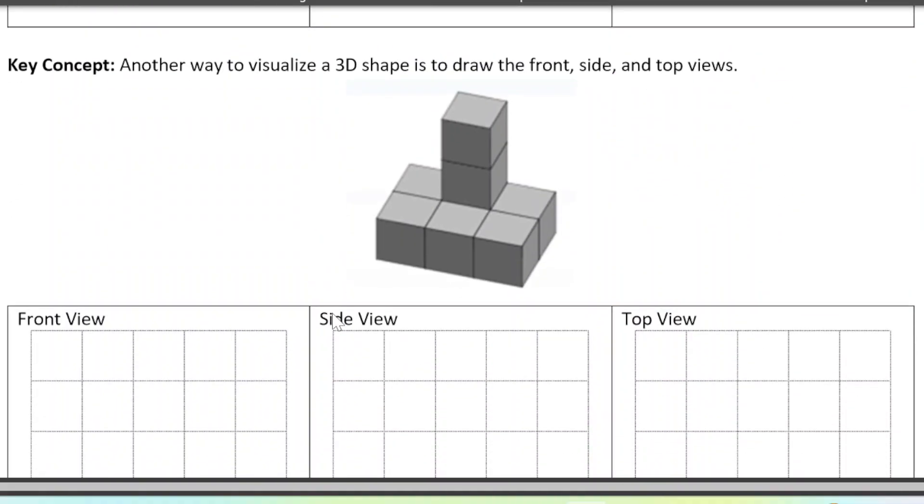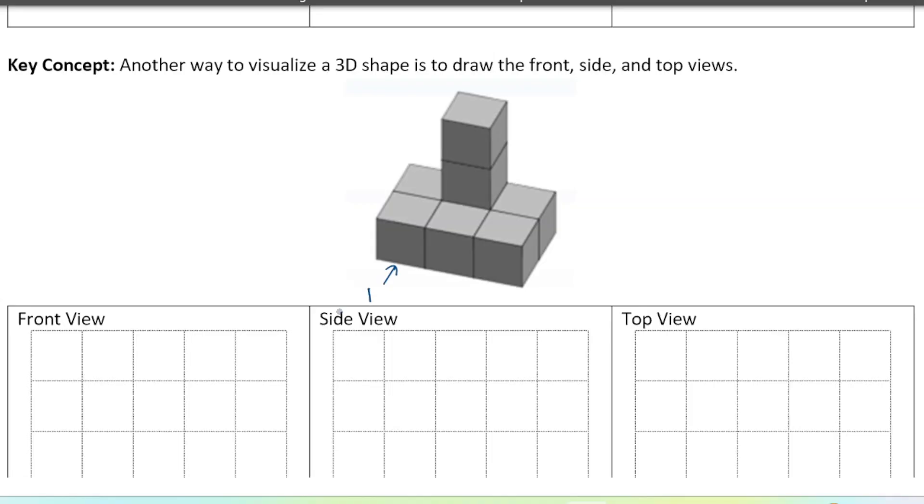Okay. Another way to visualize a 3D shape is to draw the different viewpoints of the shape. So when we're looking at a shape, we see the front view, the side view, and then the top down view. You can imagine you're flying over top of the shape and you're looking directly down at it.